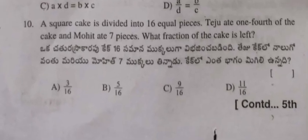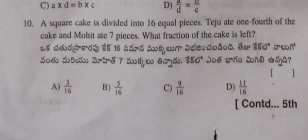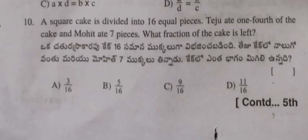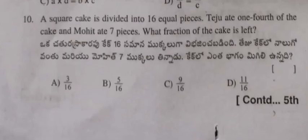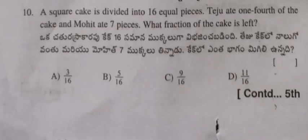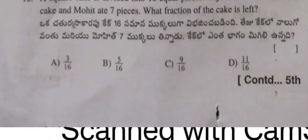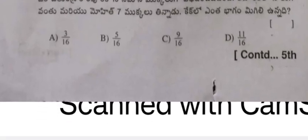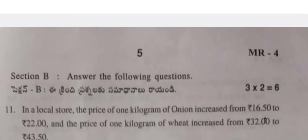Question 10: A square cake is divided into 16 equal pieces. Teju ate one fourth of the cake and Mohit ate seven pieces. What fraction of the cake is left? (A) 3/16, (B) 5/16, (C) 9/16, (D) 11/16.